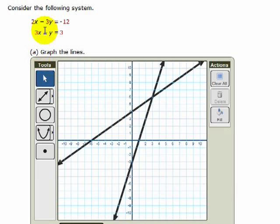So now I've graphed both lines, and from those lines I can see the solution of the system of equations, which appears to be at 3, 6.